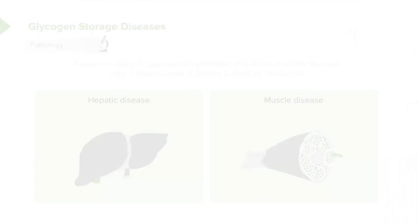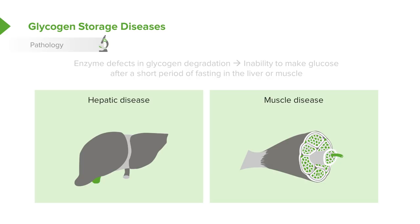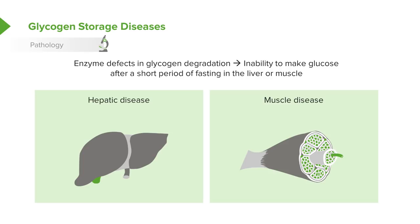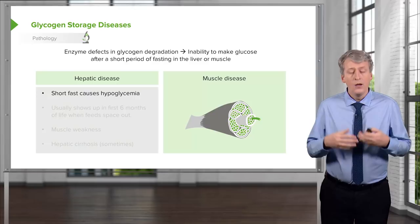Glycogen storage diseases are probably the most common issue around glucose metabolism. Essentially, enzyme defects in glycogen breakdown result in an inability to make glucose after a short period of fasting in the liver and the muscle, so patients can present with both hepatic disease and muscle disease. In other words, they're having a problem getting the glucose out of their glycogen stores. With hepatic disease, a short fast can cause hypoglycemia.